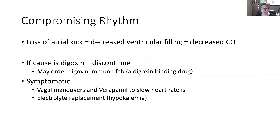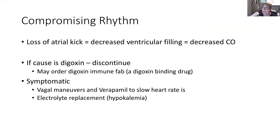This is a compromising rhythm because we lose atrial kick. Atrial kick is when the atria contract and, during the PR interval where the AV node is holding electricity, the atria push that last bit of blood out one more time. When we lose that, our ventricles are not full, so when the ventricles contract the ejection fraction drops and we lose cardiac output.